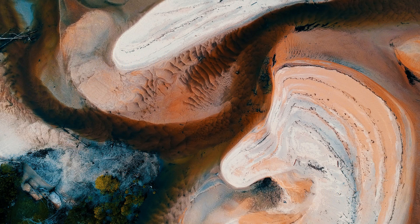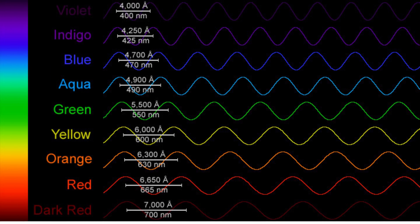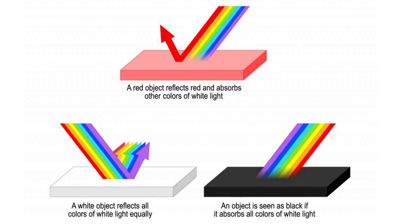The role of pigments: the colors we perceive are often due to the presence of pigments in an object. Pigments are substances that selectively absorb certain wavelengths of light. For example, black pigments absorb a wide range of wavelengths across the visible spectrum, while white pigments reflect most wavelengths, resulting in a white appearance.